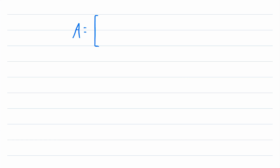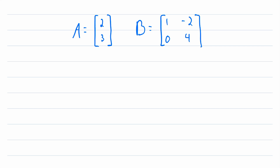Let's say matrix A has one column with entries of two and three. And then another matrix B, which has entries of one, zero, negative two, and four — a nice simple two by two matrix.